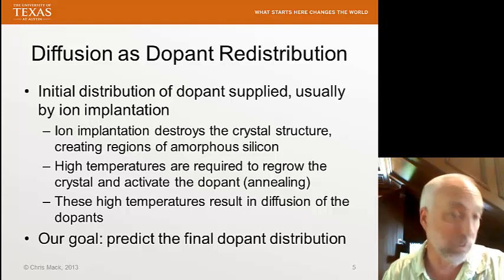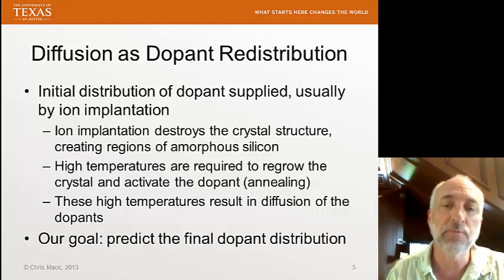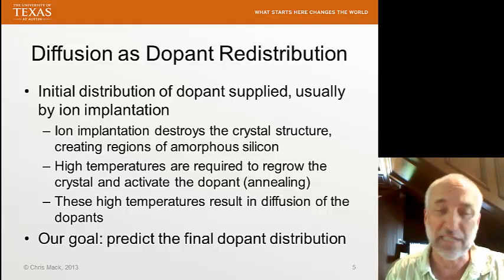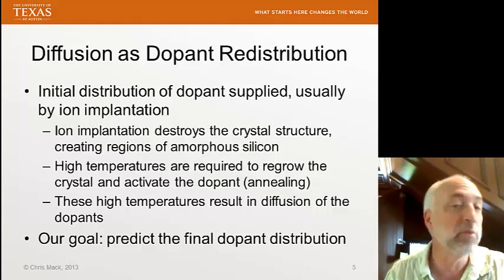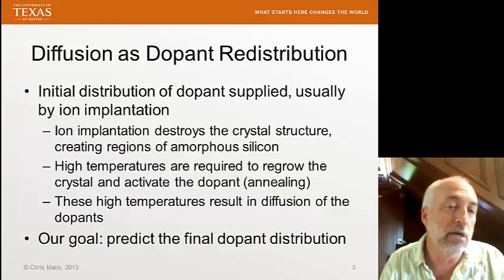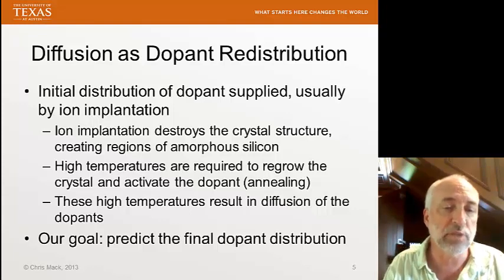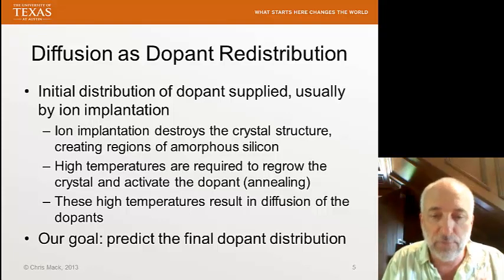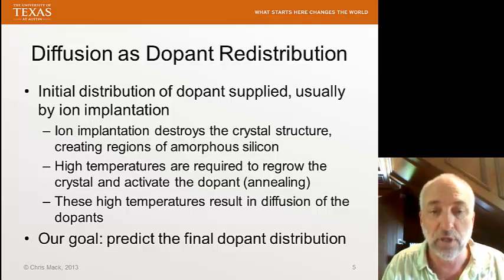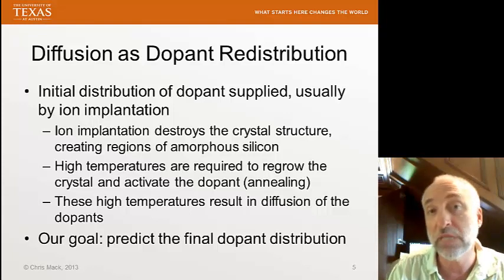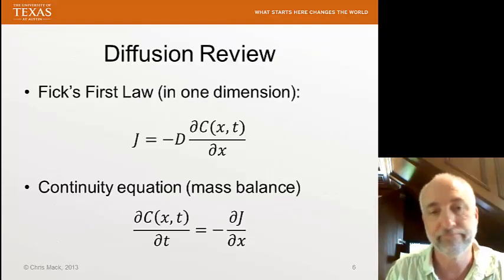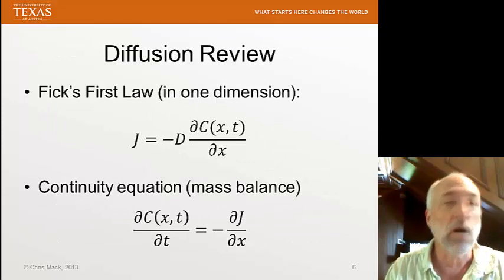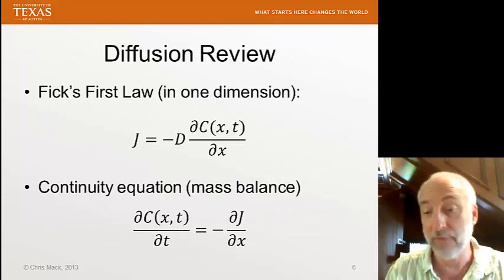But if we design our process properly, the end result will be a dopant distribution that's exactly what we wanted from the beginning. So when we design a device with a particular dopant distribution in mind, we have to find an implant and diffusion combination that produces the final dopant distribution to be exactly what we want it to be. So how do we predict what that final distribution is going to be? Well, we need to understand diffusion.